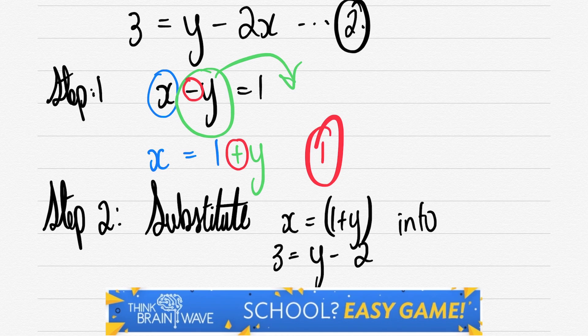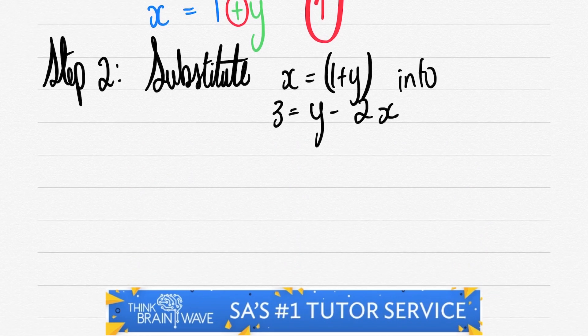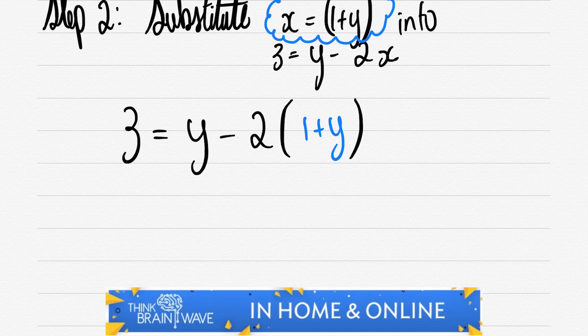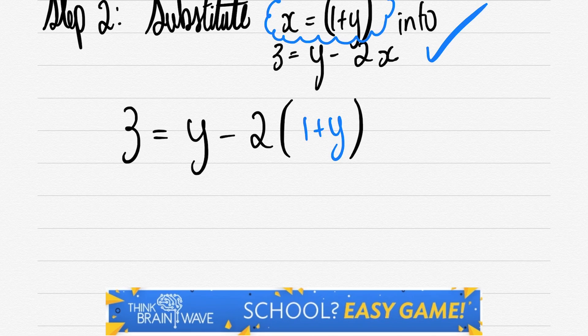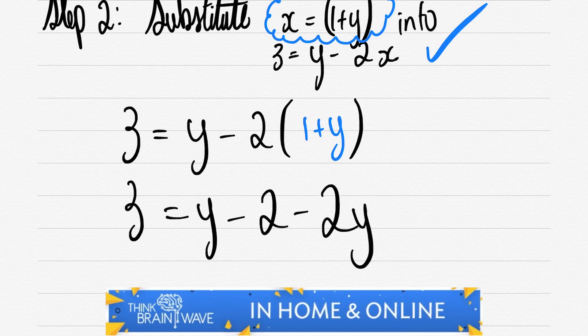So the equation is naturally 3 = y - 2x. I've written it down and I've just made a cloud around the x = 1 + y. So as you can see I've added the 1 + y in to replace the x value. And as you can see there are no x values left.